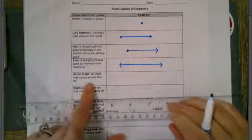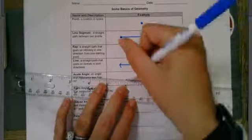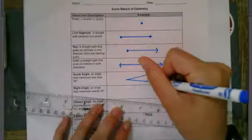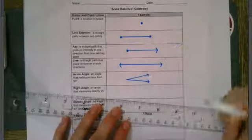Acute angle. An angle that measures less than 90 degrees. Okay. So I'm going to go here and here. And there's my angle.